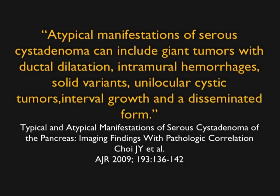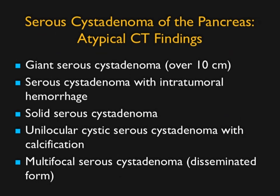Polycystic pattern: 70% of cases have cysts measuring 2 cm or smaller. Central scar that calcifies is not uncommon. Honeycomb pattern has numerous cysts under a centimeter in size. Oligocystic is uncommon, less than 10% of cases, with few septations. This was commonly called a macrocystic cystadenoma, but that term is confusing and no longer used. Atypical manifestations per Cho include giant tumors with duct dilatation, hemorrhage, solid variance, unilocular cystic tumors, interval growth, and dissemination.